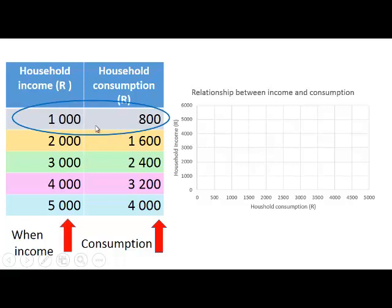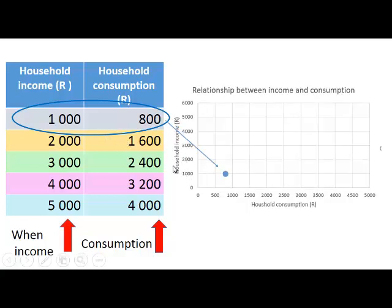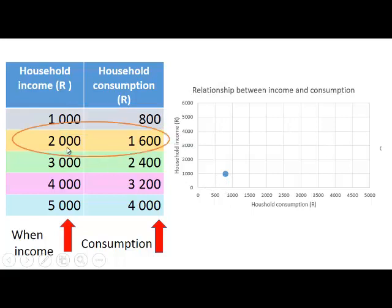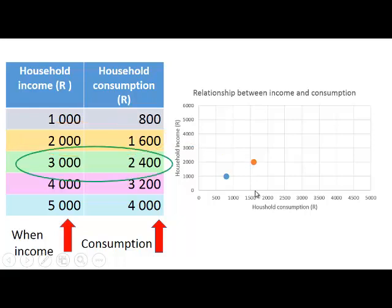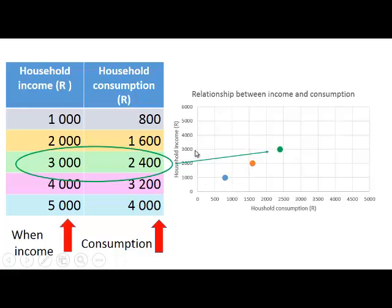We first show a point on the diagram where a household income of one thousand rand implies household consumption of eight hundred rand. The second point: when household income increases to two thousand rand, household consumption increases to one thousand six hundred. The third point: when household income is three thousand, household consumption increases to two thousand four hundred.